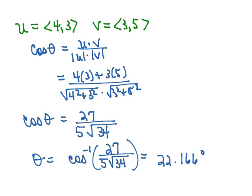So again, if we go back and think about what we're doing here, we have a vector, which in component form is 4, 3. So that would be our vector u. And we have a vector v, which in component form is 3, 5.